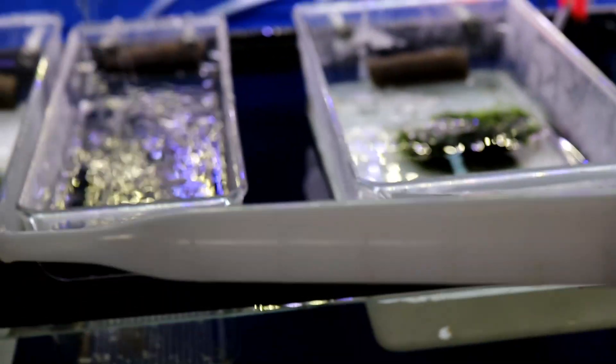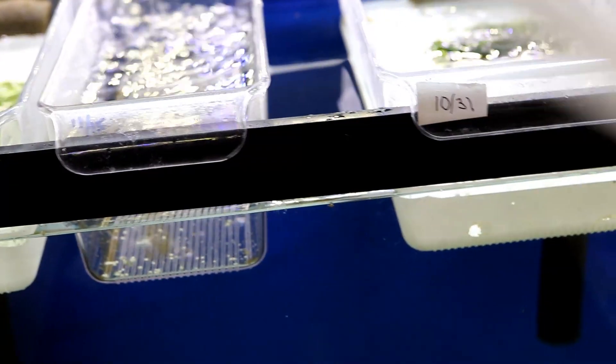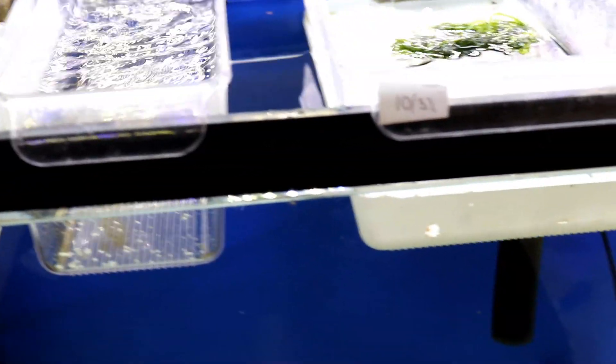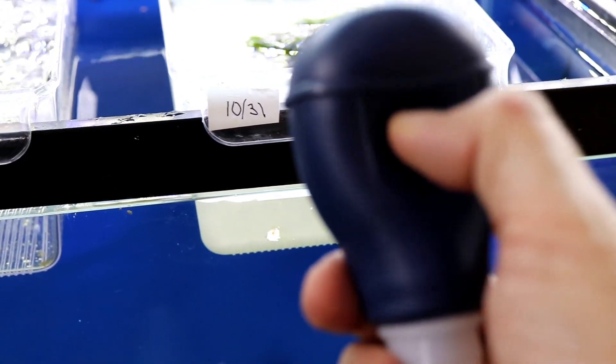A lot of times what I end up using is like a turkey baster to catch them, because this is also what I use to feed them, because I feed them brine shrimp anywhere from three, four, five times a day. And so, you know, I just kind of suck them up in this and put them in the other one.